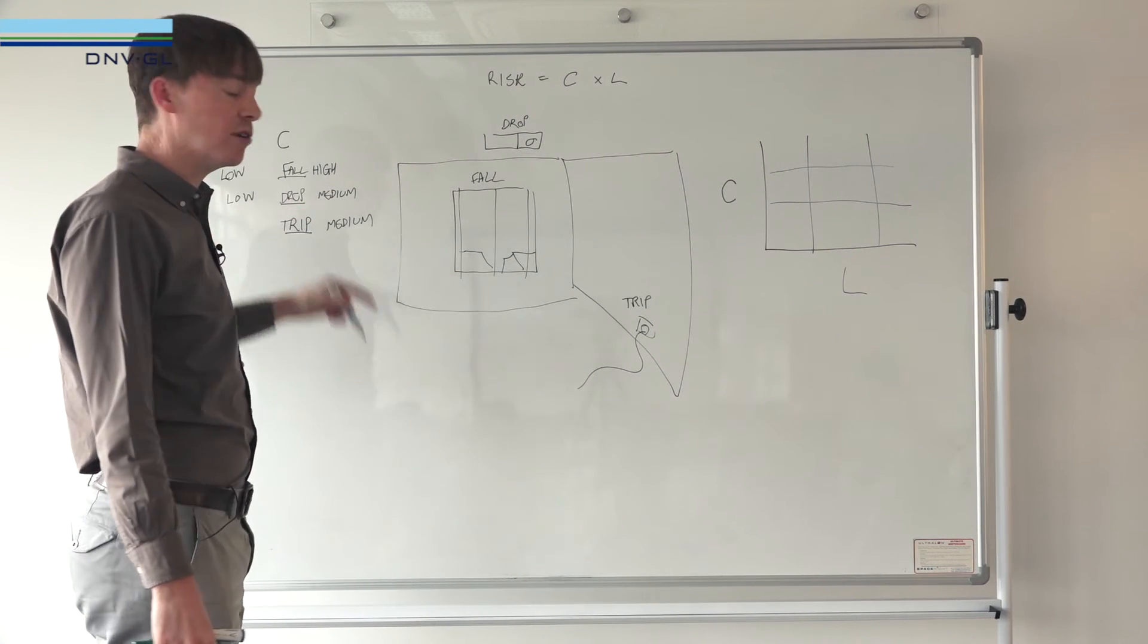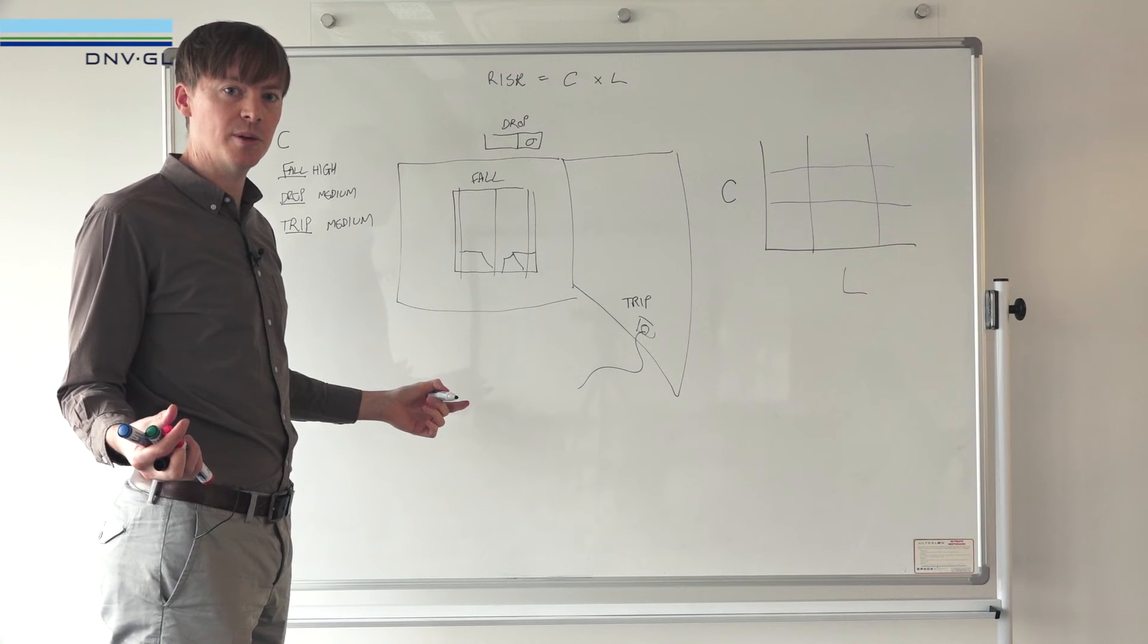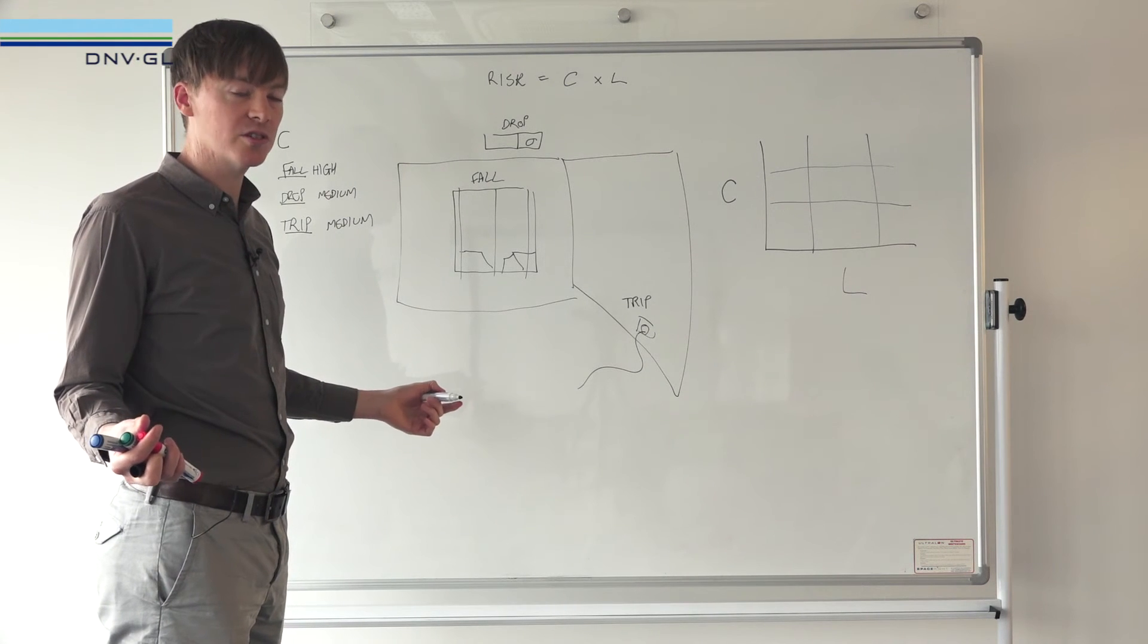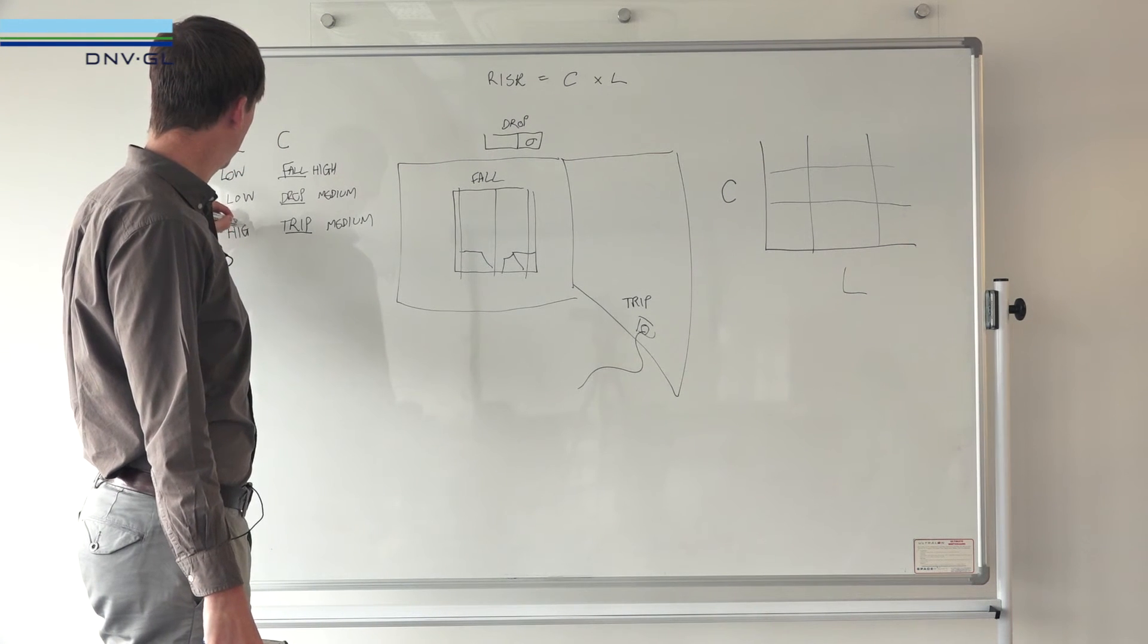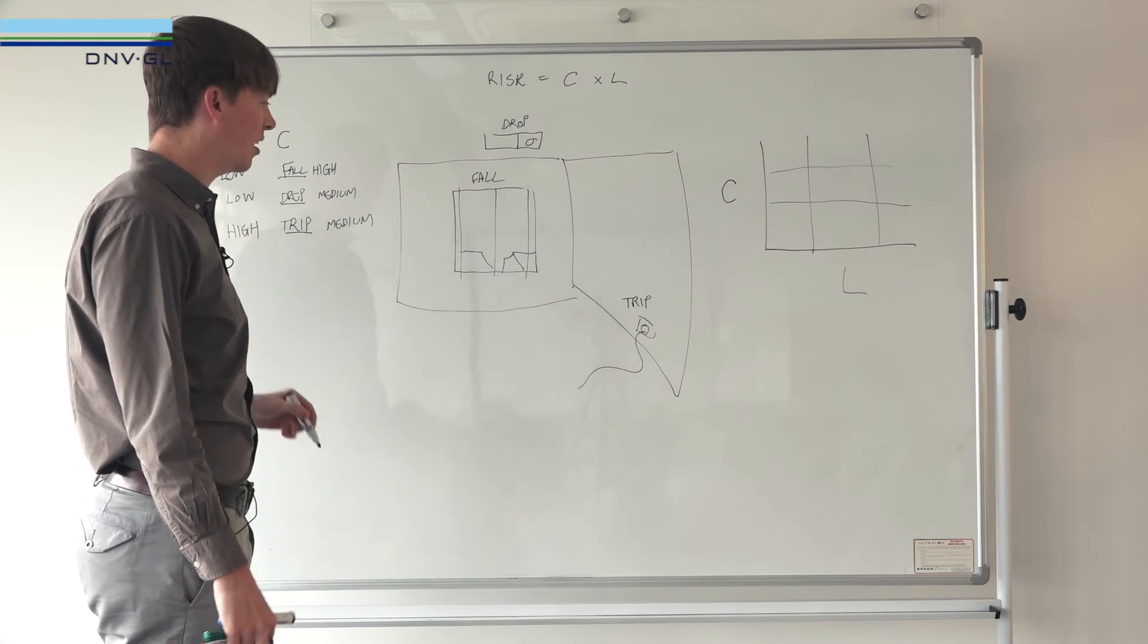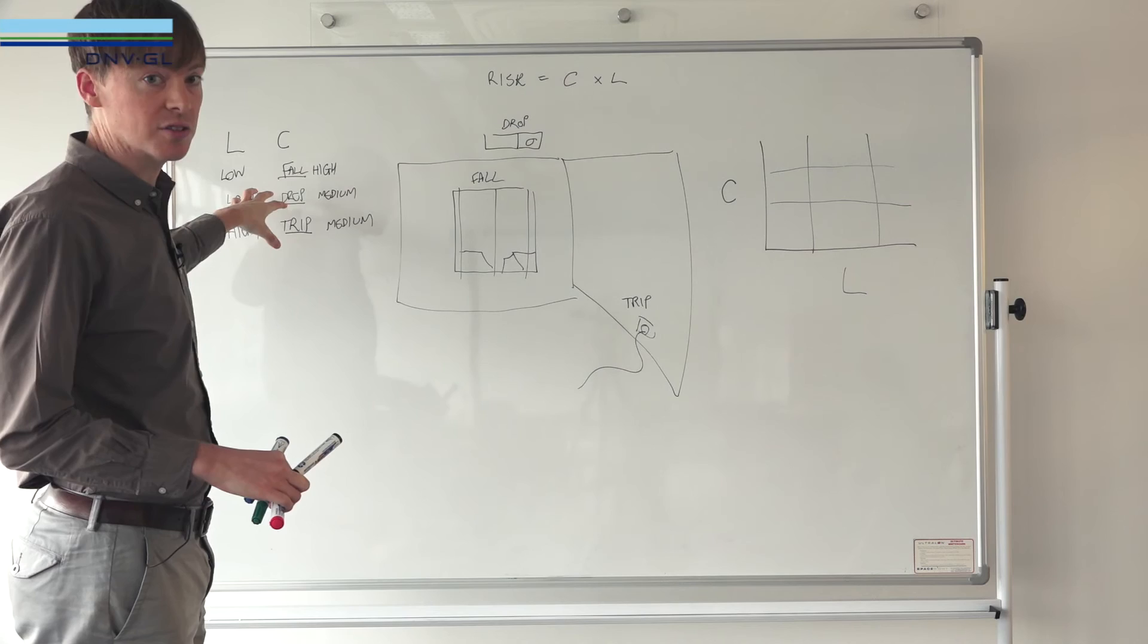A trip hazard - we're in the office, think about how many times you see people trip up over a wire. Might be once a week. It's got a ridiculously high likelihood, so it's only got a medium consequence but it's got a pretty high likelihood.